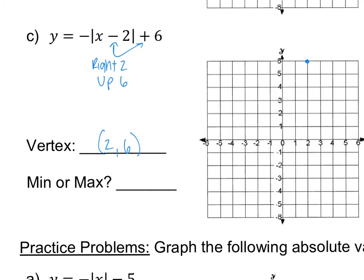I have my vertex. Now I need to graph the two other points using my slope. But I have a negative sign in front of my x. That tells me my slope is actually negative 1. Remember, if there's not a number there, you always assume a 1. But since there's a negative sign, this is negative 1. So the slope is negative 1 over 1.